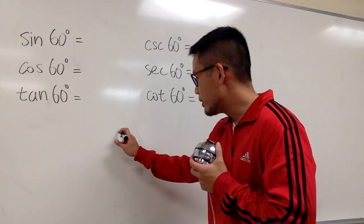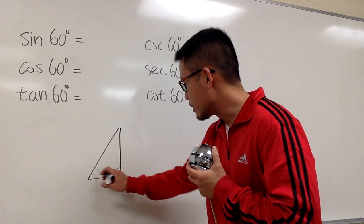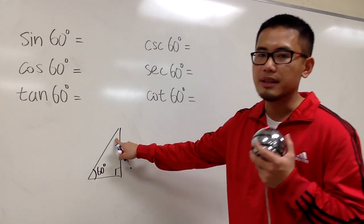So, let me draw the picture this way right here. Let me put the right angle here and label this as 60 degrees, and we know this will be the 30 degrees, right?